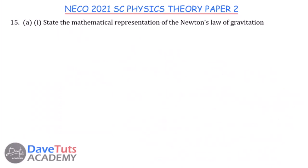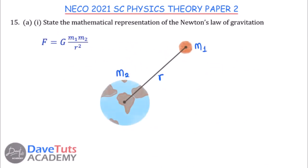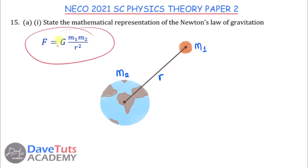Newton's law of gravitation states that the force of attraction between two bodies is proportional to the product of their masses and inversely proportional to the square of the distance between them. Mathematically: F = GM₁M₂/R², where R is the distance between the two bodies, M₁ and M₂ are their masses, and G is the gravitational constant.